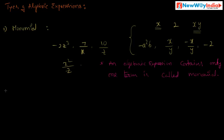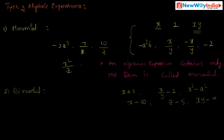Next, binomial. What is a binomial? Consider x plus 2, x divided by y minus 2, x squared minus a squared, x minus 10, z minus 5, and xy minus yz. Observe these expressions — they all contain only two terms, separated by a plus or minus symbol.